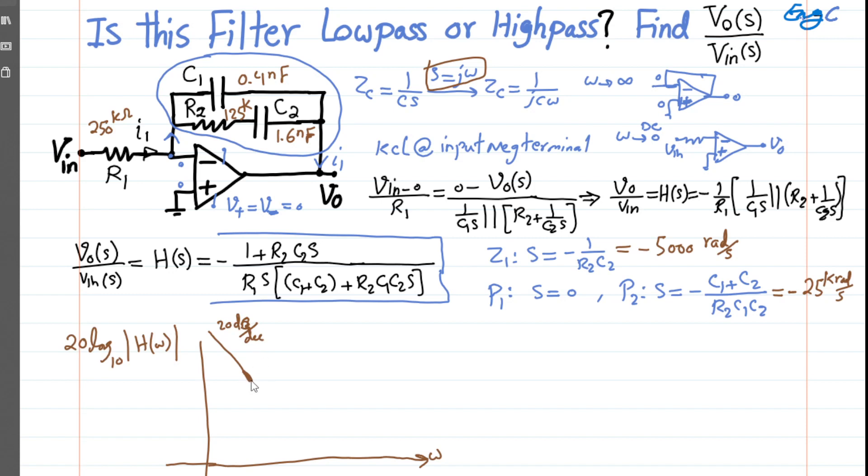And this continues approximately up to the point that ω reaches 5,000 radians per second. And then at that point, the zero counteracts the pole. So we have roughly a constant, very approximately. And then as soon as we hit the 25,000, the second pole kicks in, counteracting the impact of the zero.